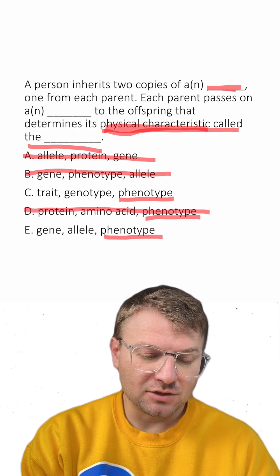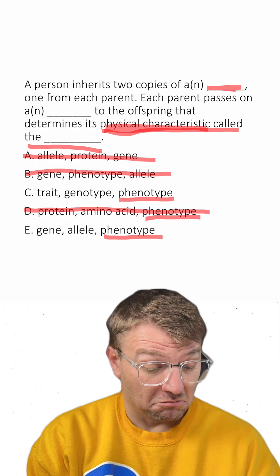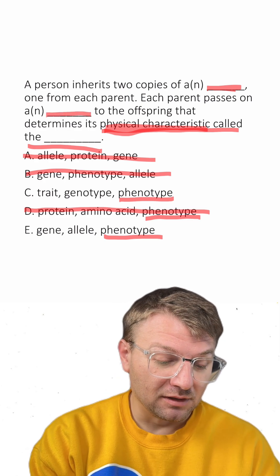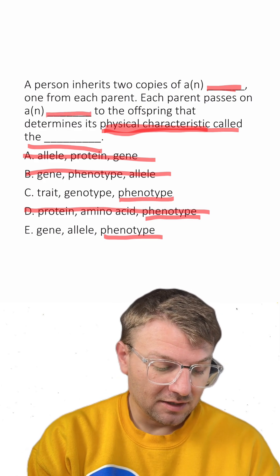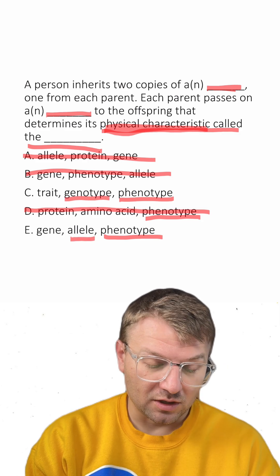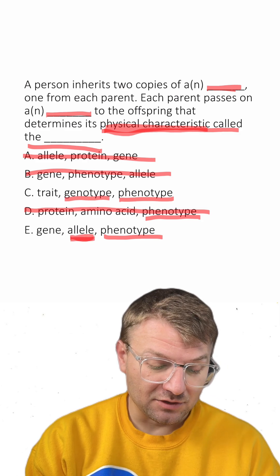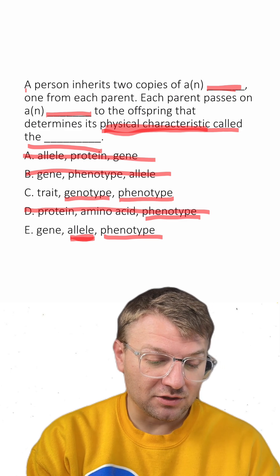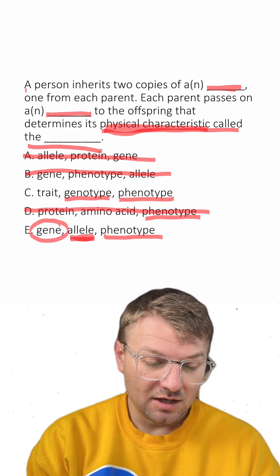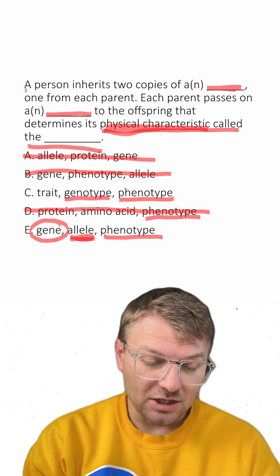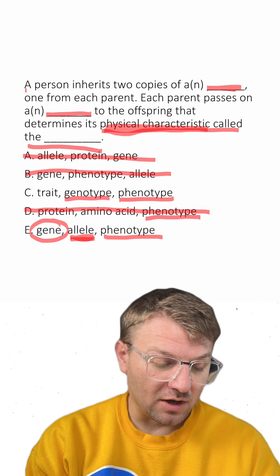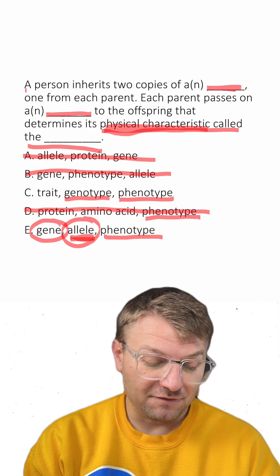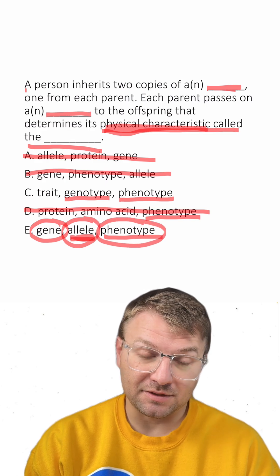A person inherits two copies of a gene — that sounds pretty good. Each parent passes on a blank to the offspring: is it genotype or allele? Allele sounds a lot better. So: a person inherits two copies of a gene, one from each parent. Each parent passes on an allele to the offspring that determines its physical characteristic called a phenotype.